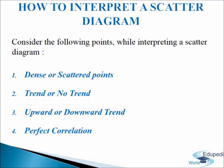Third, upward or downward trend: if there is an upward trend rising from the lower left-hand corner going to the upper right-hand corner, the correlation is positive, meaning the two variables move in the same direction. If points depict a downward trend from the upper left-hand corner to the lower right-hand corner, the correlation is negative, meaning the variables move in opposite directions. Fourth, perfect correlation: if points on a scatter diagram lie on a straight line with a positive slope, correlation is perfect and positive; if all points lie on a straight line with a negative slope, there is perfect negative correlation.